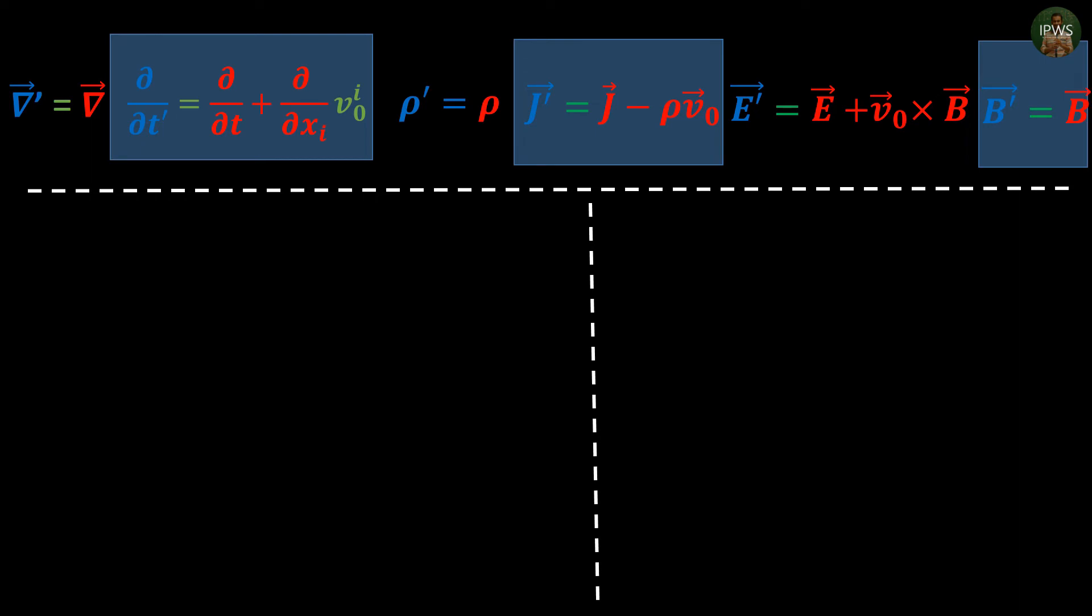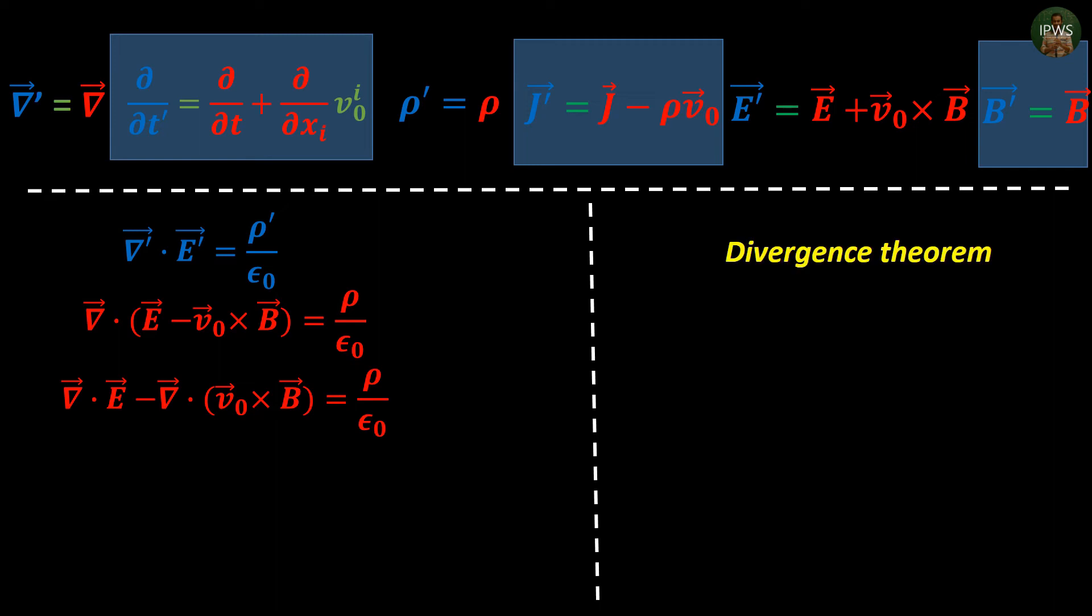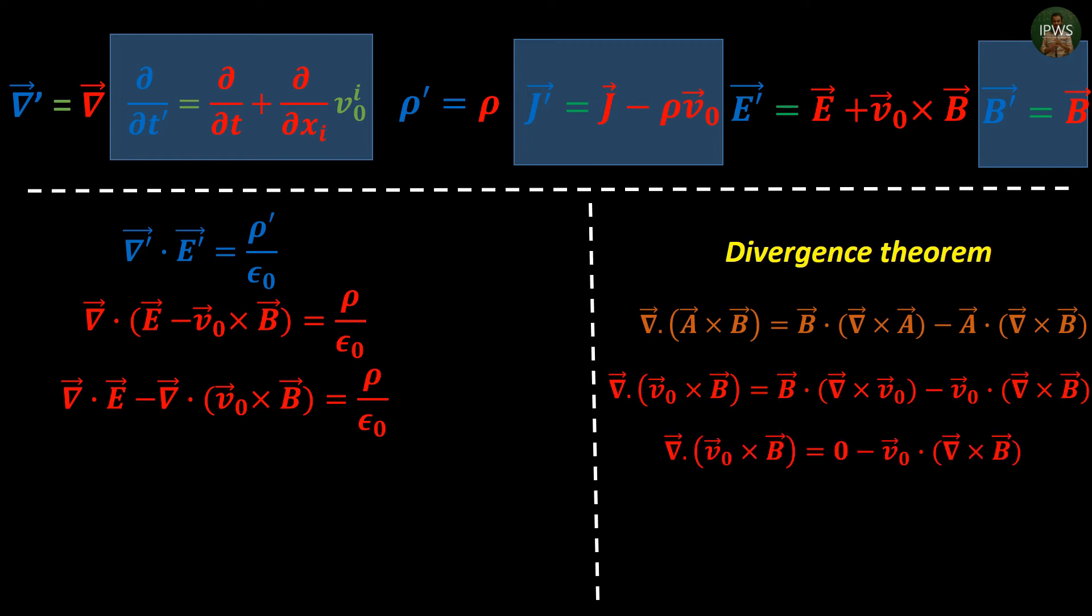We have our first equation which is the restatement of Gauss's theorem. We replace the electric field and when we expand we have a term ∇·(v0 × B). Since it is a divergence of a cross product we can use divergence identity. We replace a with v0 and v0 being a constant has zero derivative. So ∇·(v0 × B) is the same as taking out v0 and doing curl over B.